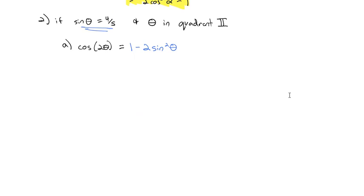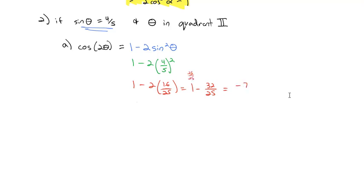We plug in the given information that sine is 4/5: 1 minus 2 times (4/5) squared. Using order of operations, that gives 1 minus 2 times 16/25, or 1 minus 32/25. Since 1 is 25/25, we get 25 minus 32, which gives negative 7/25. So the cosine of 2θ is negative 7/25.